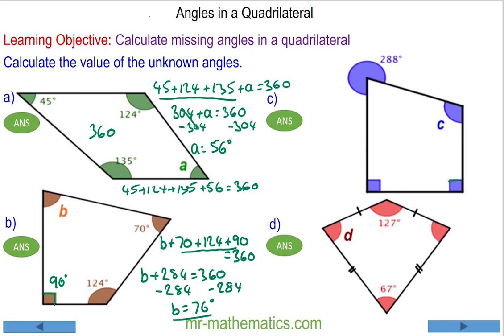For question C, we know these two angles are perpendicular, which means they add up to 180 in total. And the exterior angle here is 288.